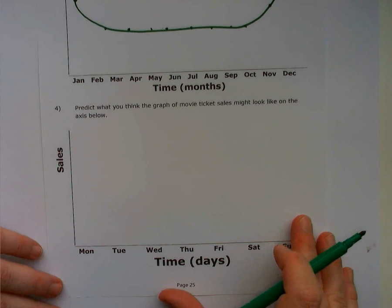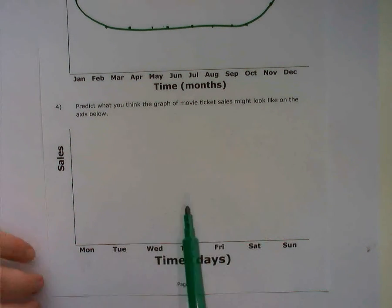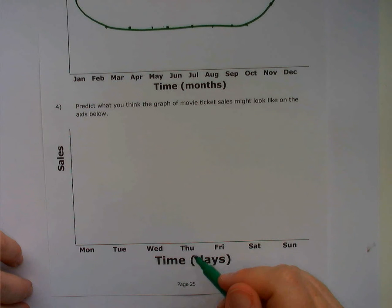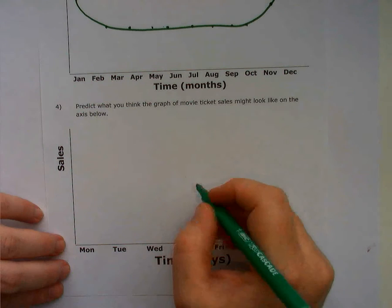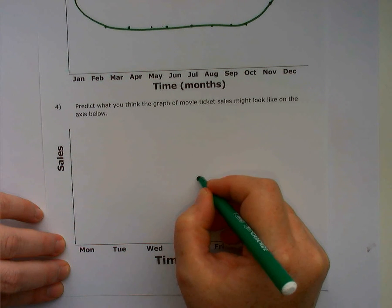So our last one here, predicting the graph of movie ticket sales. When do people go to the movies? Movies come out on Thursday. So if it's a new release, they'll come out on Thursday. So I'm going to expect Thursday might be a little bit more than normal.